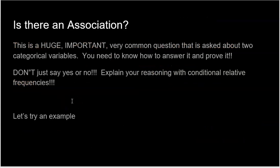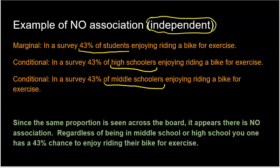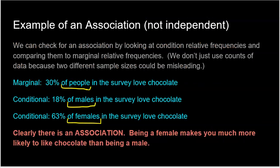So let's end with this: is there an association? You're going to get this question on multiple worksheets, quizzes, and tests. You can never just say yes or no — you have to prove it with conditional relative frequencies. For example, I'd say: 43% of kids like to ride bikes, 43% of middle schoolers, 43% of high schoolers — being in high school or middle school does not impact bike riding. Or: 30% of people like chocolate, 18% of males, 63% of females — gender does impact liking chocolate.